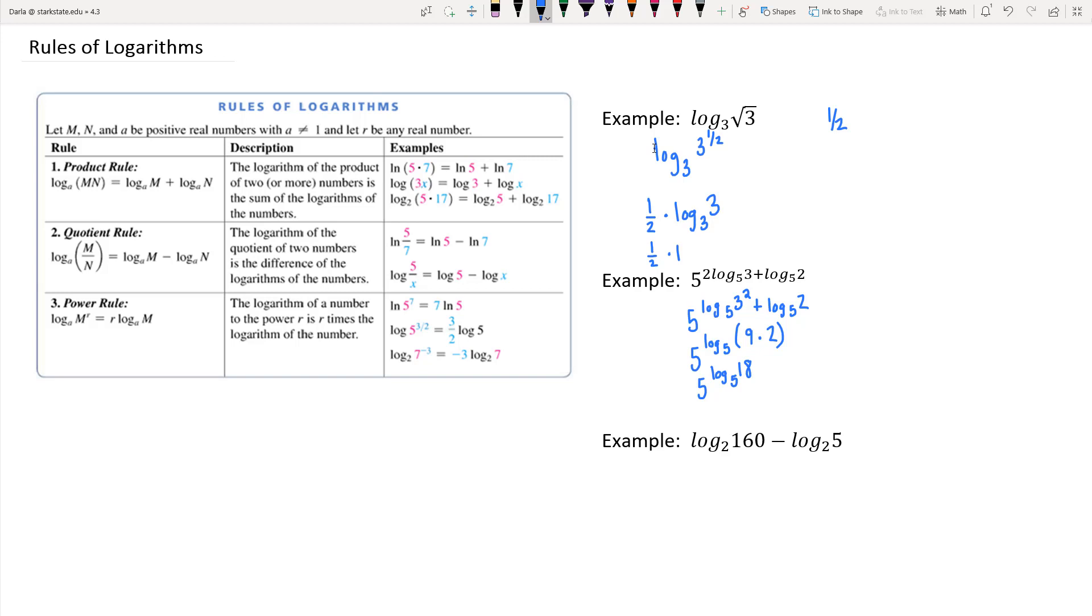So this is five raised to log base five of 18. And then we have exponential base five and a logarithm base five. We know that those are inverses, and we're left with our x, which in this case is 18.